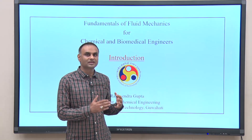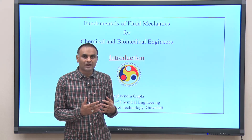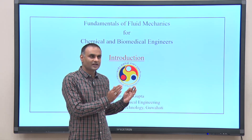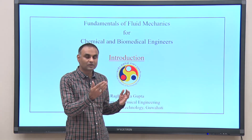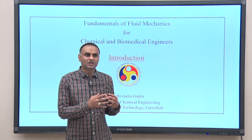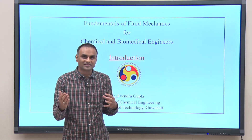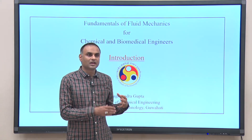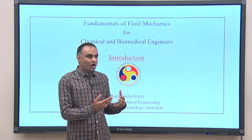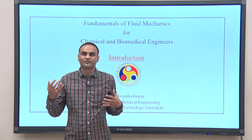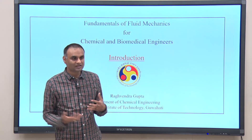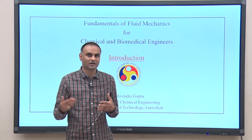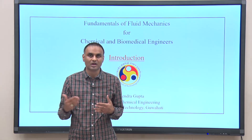Chemical engineers are generally concerned with scaling up lab-scale production. When somebody has developed a process at the lab scale to produce a particular chemical, producing it at a large scale is the job of a chemical engineer, and it is done in a continuous manner. All the reactants and products flow through a set of process equipment — a heat exchanger, a reactor, a separator, an evaporator, a boiler, and so on.